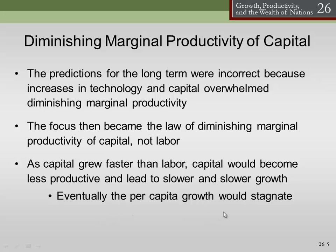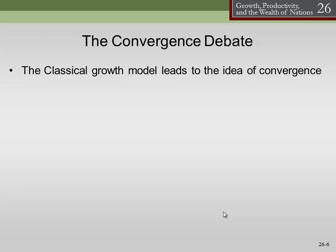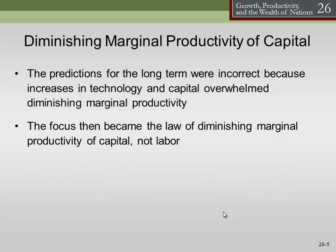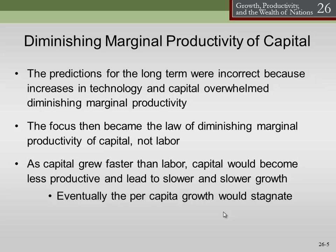Eventually, per capita growth would stagnate. This is the basic idea that at some point we come to some kind of a steady state. I don't want to go into this too much because that's intermediate macro — it gets too much math for a principles class. But essentially, we come up to some point where things are stable and all the forces are in balance with one another. That's what we talk about: this per capita growth rate stabilizing.